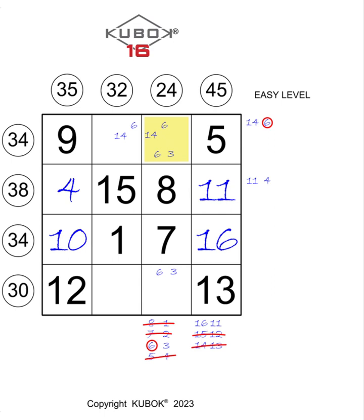Furthermore, as we have already seen, the number that can be inserted at the intersection between the first line and the third column must be included in each of the two pairs of numbers, and this number is the 6 present in the pair of numbers of the first line, 14 plus 6, and of the third column, 6 plus 3.